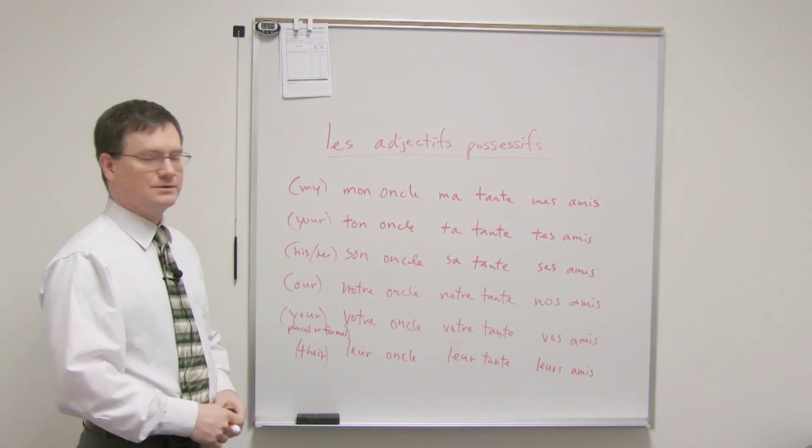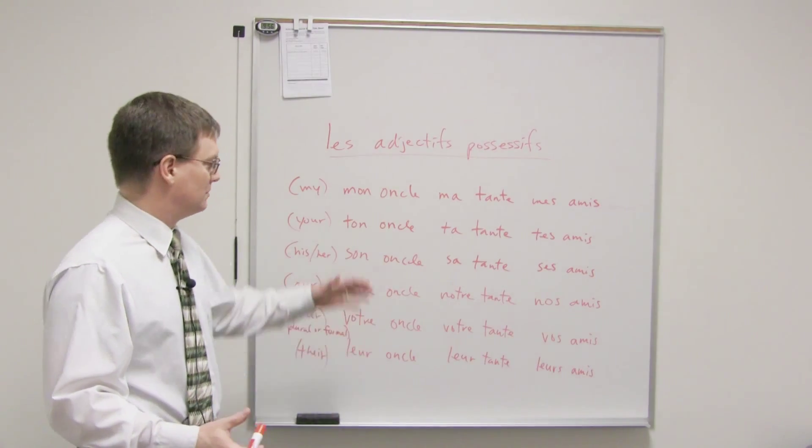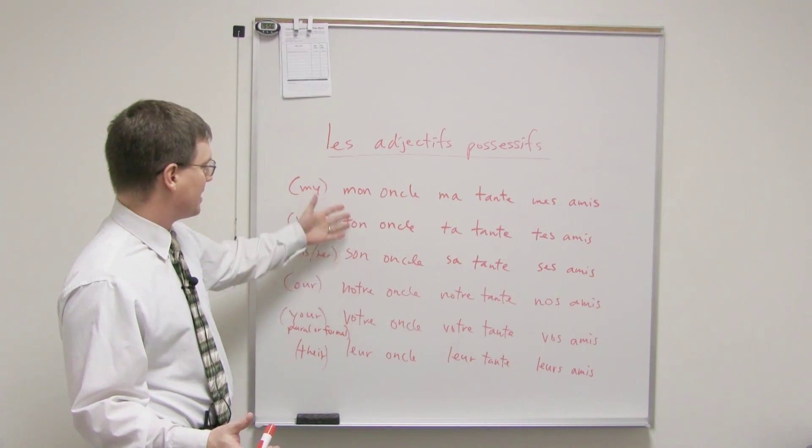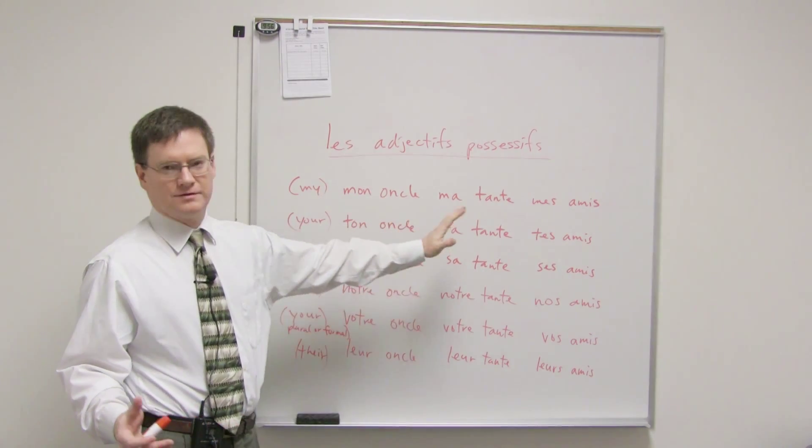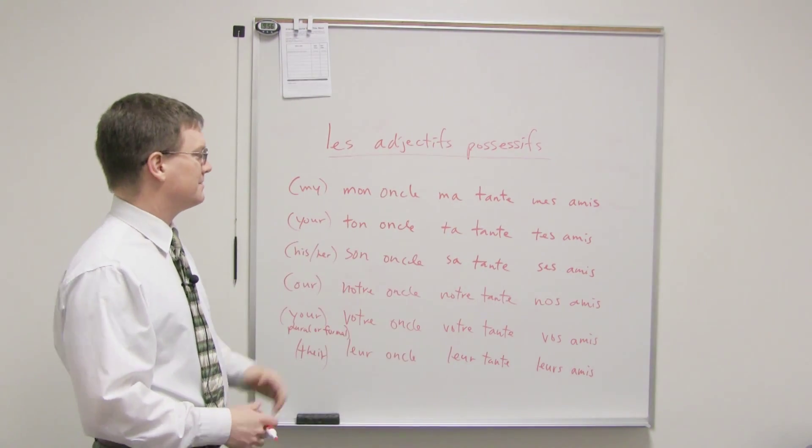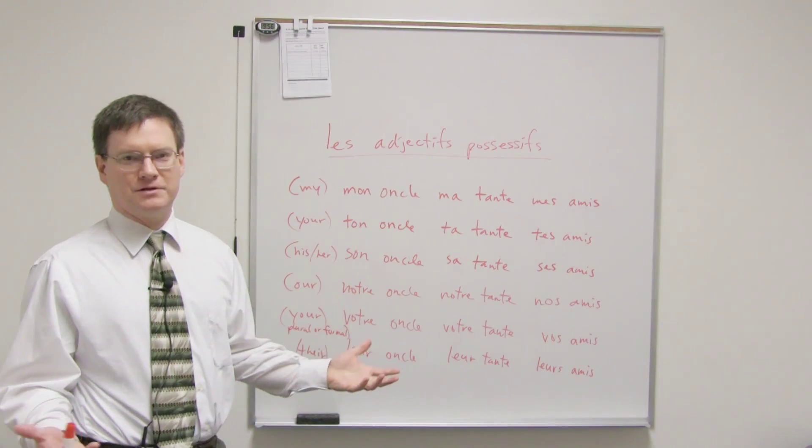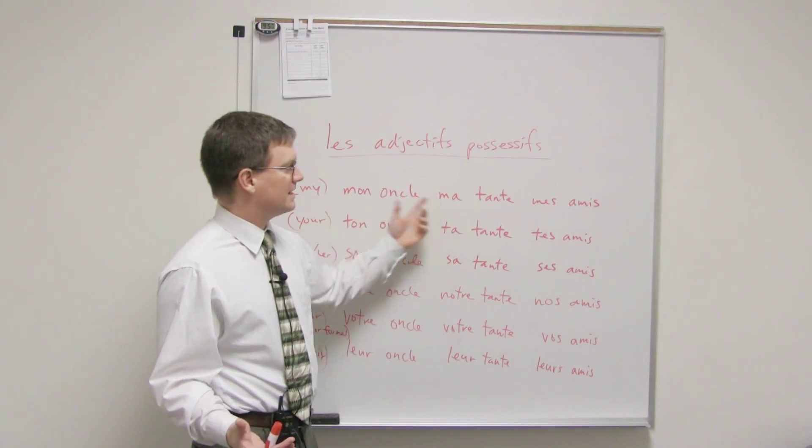Possessive adjectives are really quite easy, because once you learn the basic way of saying my, your, his, her, whatever, all you have to do is figure out whether the noun is masculine or feminine or plural. Plural is easy. The big thing is masculine or feminine.